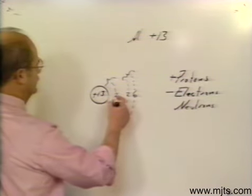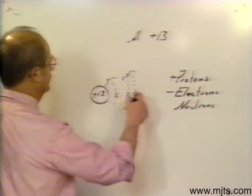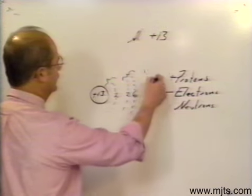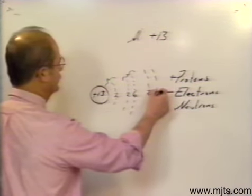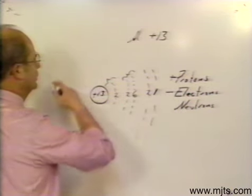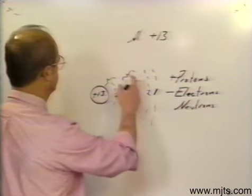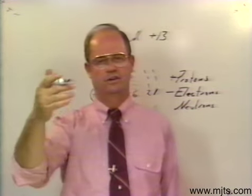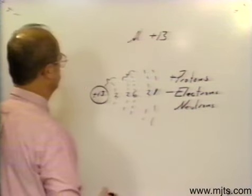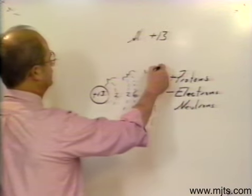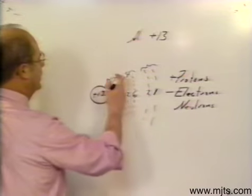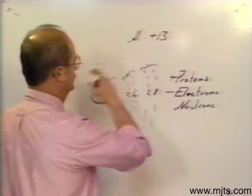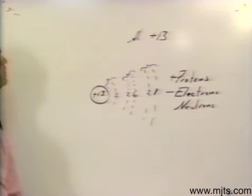If I start counting, I've got two, then eight — that's ten. As I go out to the next shell, I'll have two, then one left over, so I'll have one electron orbiting in the outer shell of the atom. These are energy levels: we can only have two, eight, eighteen, thirty-two as you move out on an atom.